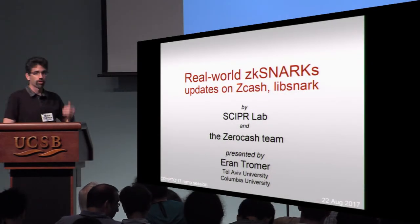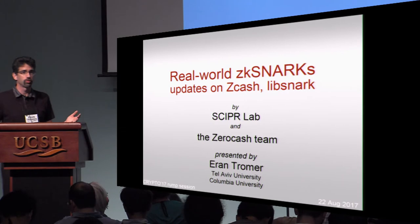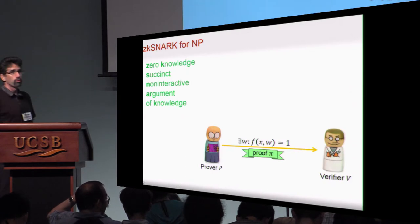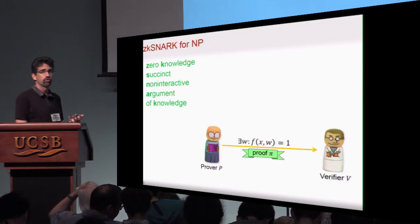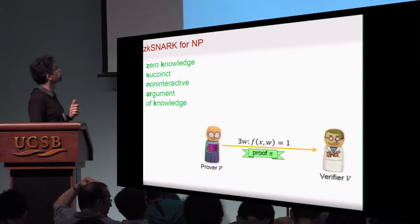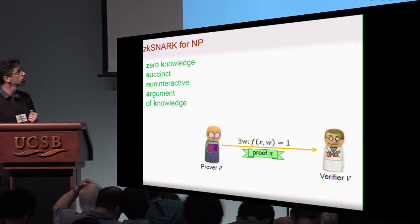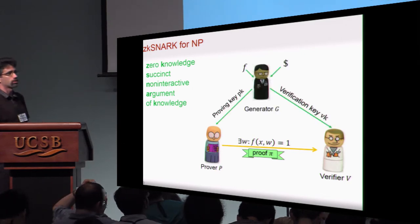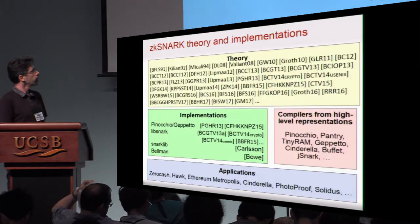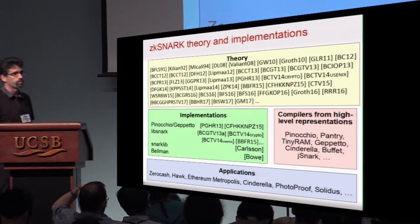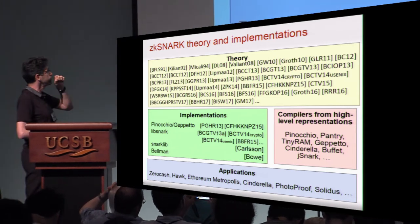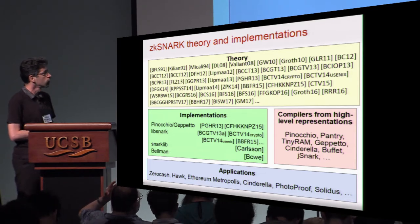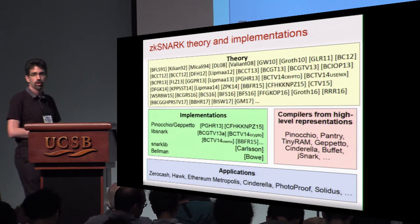My colleagues at Skipper Lab, the ZeroCache team and myself would like to take this opportunity to tell you about the brave new world of ZK-SNARK applications. ZK-SNARKs are a particularly efficient form of zero-knowledge proofs. They are succinct, non-interactive arguments of knowledge between the prover and the verifier, and necessarily there's also a generator setting up a common reference string. There has been a wealth of fascinating literature on this, starting with the seminal works on zero-knowledge, and especially productive over the past decade in terms of theory, implementations, compilers from high-level representations, and specific applications.